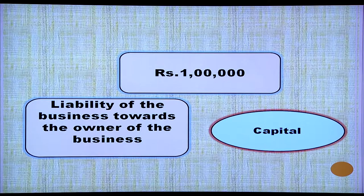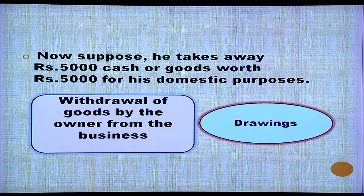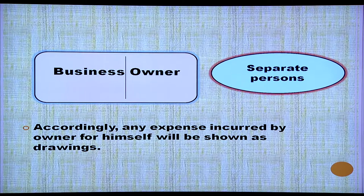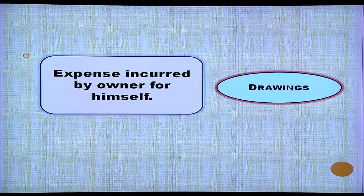The 1 lakh invested by the owner is the capital. It is the liability of the business towards the owner. Suppose he takes away rupees 5,000 in cash or goods for domestic use — this is withdrawal of goods by the owner from the business, and it is recorded in the business accounts as drawings. Business and owner are separate persons. Any expense incurred by the owner for himself will be shown as drawings.